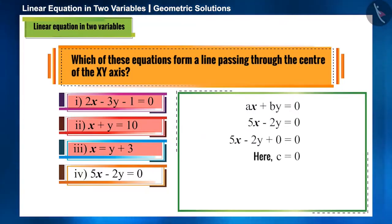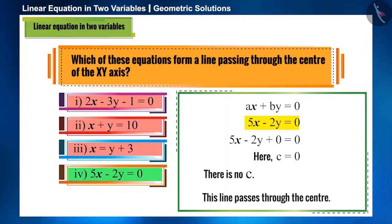Friends, among the given options, only in the fourth option, c is 0 or there is no c. Therefore, we can say that the line formed by the equation 5x minus 2y equal to 0 passes through the center of the x-y axis.